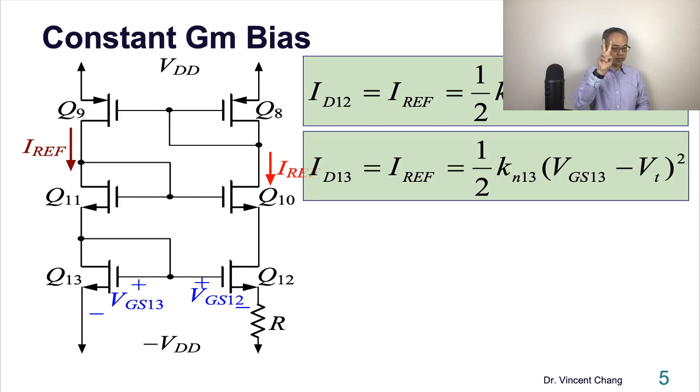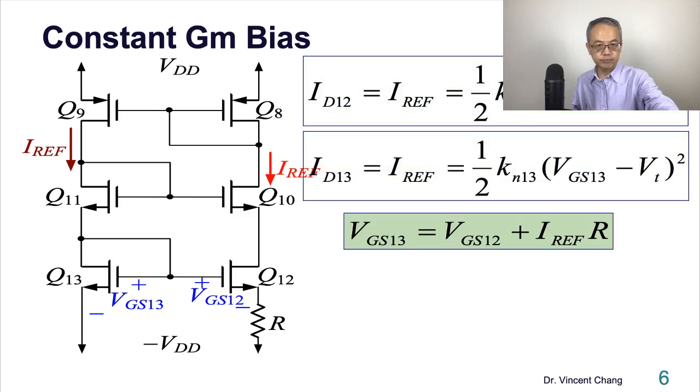You need two things. One is device matching, and the other one is apply Kirchhoff's voltage law. See, this is kind of like the Widlar current source in bipolar technology. vGS13 equals vGS12 plus the drop across R. And then solve these three equations simultaneously.